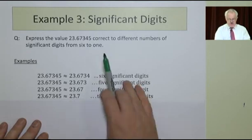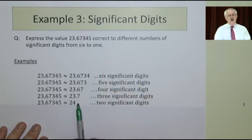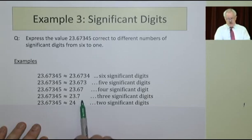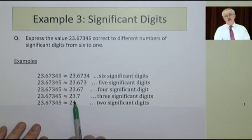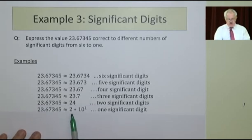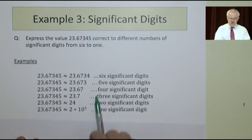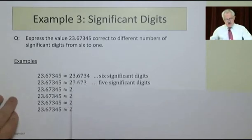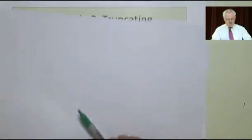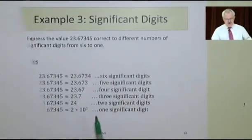23.7 is nearly 24. And if you're only left with one digit, 24 versus 23, you'd say it's nearer 20 than 30. So you'd say it's 20 or 2 × 10^1. So that's the way you do it. In terms of the digits, that's how we represent that.